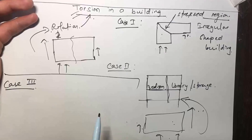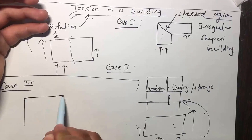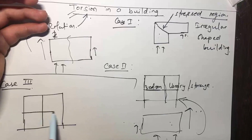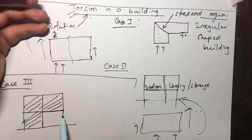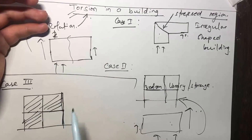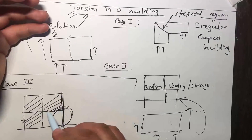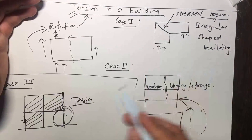Case three: consider another building elevation where you have infill walls on three sides but no wall on one portion — only columns from one end to the other. When this building is subjected to a lateral load, the columns on the open side undergo more deflection compared to the columns with infill walls. Due to this reason, the building also undergoes torsion.